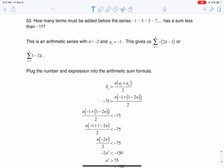how many terms do we have to add before this series has a sum that's less than negative 75? And you could actually try and do this out the long way, because you can kind of start to see the pattern here.